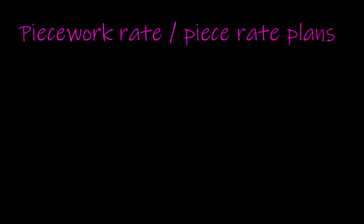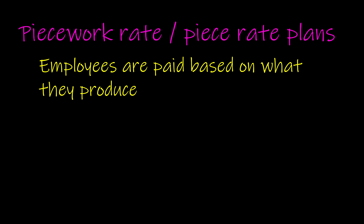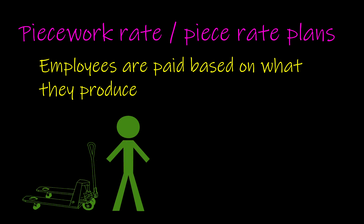The first of these that we're going to discuss here today is called a piecework rate plan or a piece rate plan. Essentially what happens here is employees are paid based upon what they produce. This works really well in environments like factories and warehouses where there are basic standard routine things that employees need to do. To give you an example of a piece rate plan, let's imagine that we have an employee working in a warehouse with a pallet jack, and their job is to pick packages that get palletized, wrapped up, and shipped out to customers. If we were putting together a piece rate plan, we might pay our employee 10 cents per package picked.